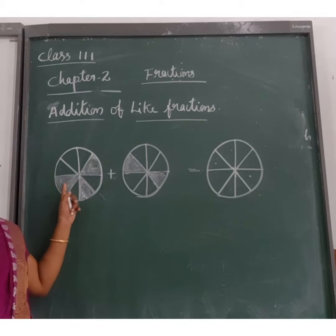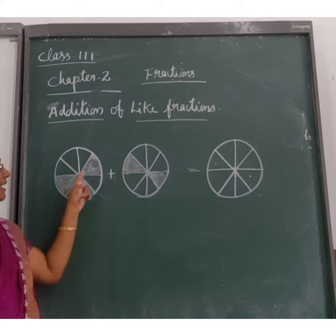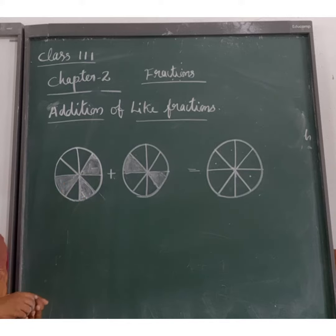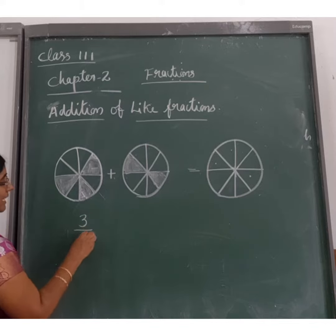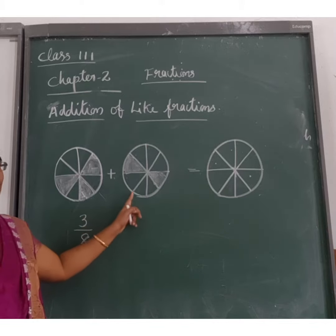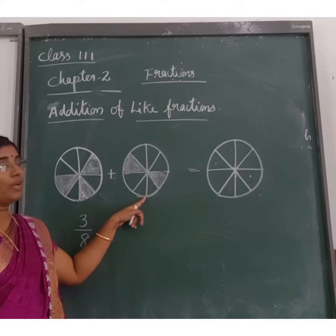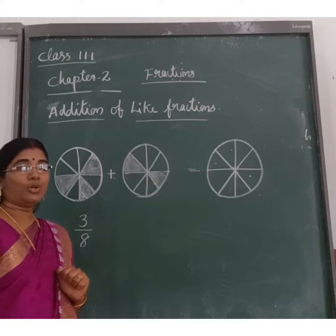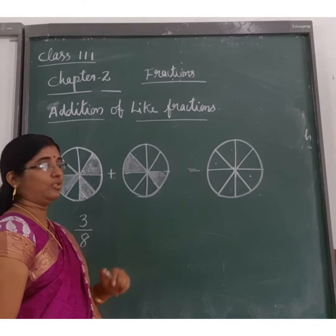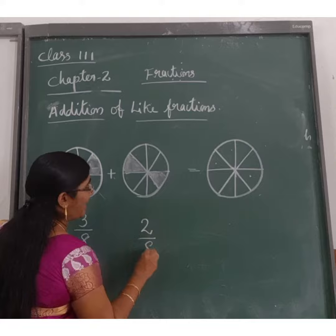It is a circle. I divide this into 8 equal parts and 3 are shaded. So what is the fraction of the shaded part? It is 3 by 8. And here is one more circle — again I divide this into 8 equal parts and 2 are shaded. So the fraction of the shaded portion is 2 by 8.